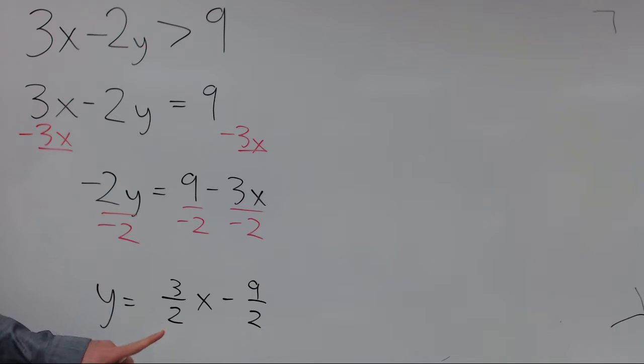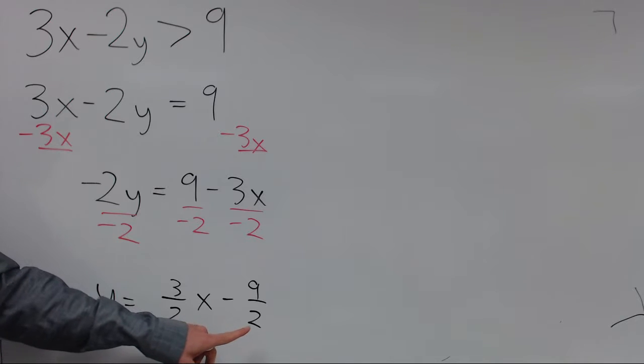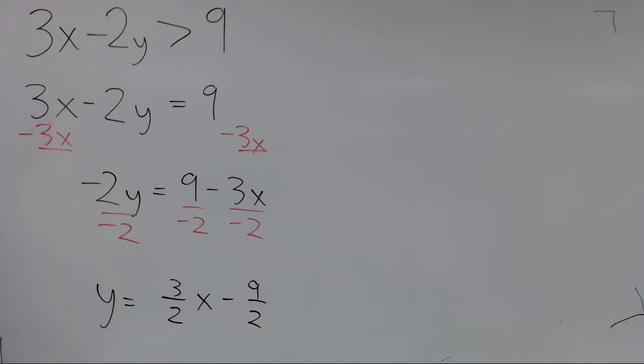So the corresponding equation is y equals 3 halves x minus 9 halves. Remember this lets us identify the slope 3 halves and the y-intercept negative 9 halves. So we can now graph this line. Now this line is the boundary line for the graph of the inequality.